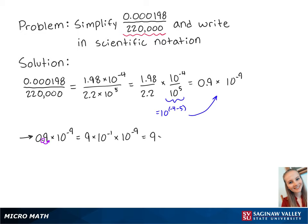And using our exponent rules one more time, this equals 9 times 10 to the negative 10. And this is the final answer.